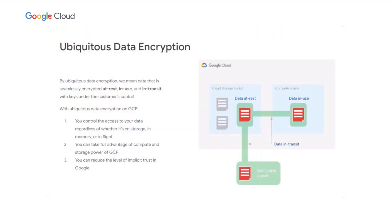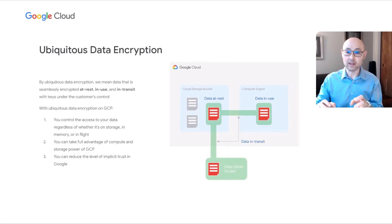Our solution is to introduce ubiquitous data encryption. This means the data you have will be seamlessly encrypted at use, at rest, and in transit, with keys under your control. Google is the first major cloud provider to provide this technology to our customers. As you can see in the diagram to the right, as data traverses throughout the system — through Cloud Storage or Compute Engine — it's going to be only visible to you, the person who owns the data. That's what the green box depicts: the data will be protected.